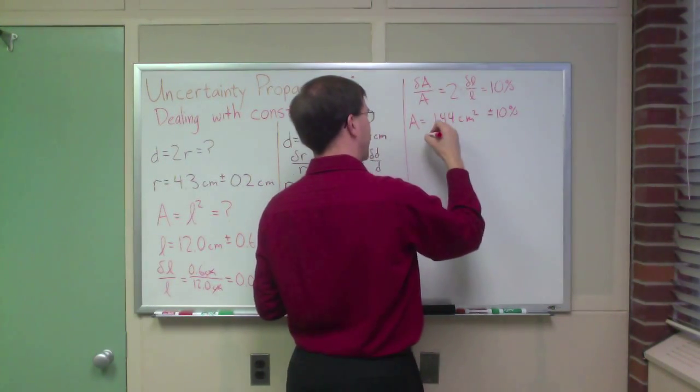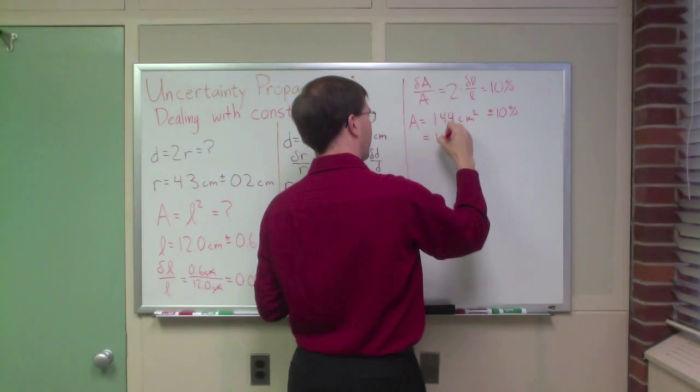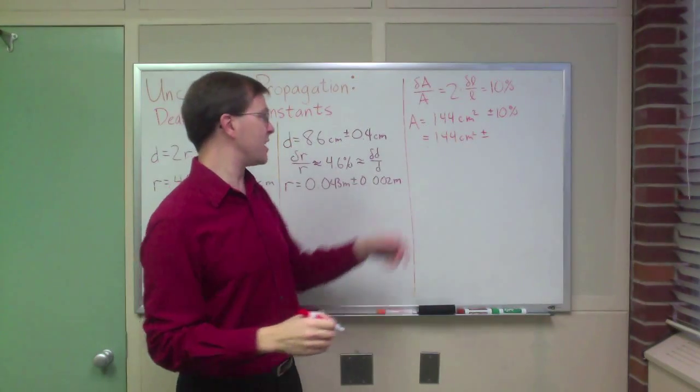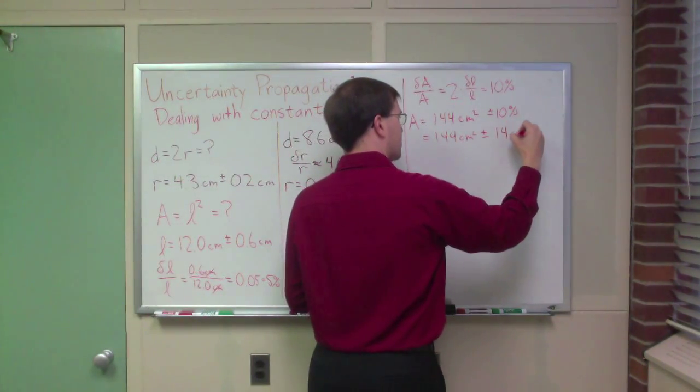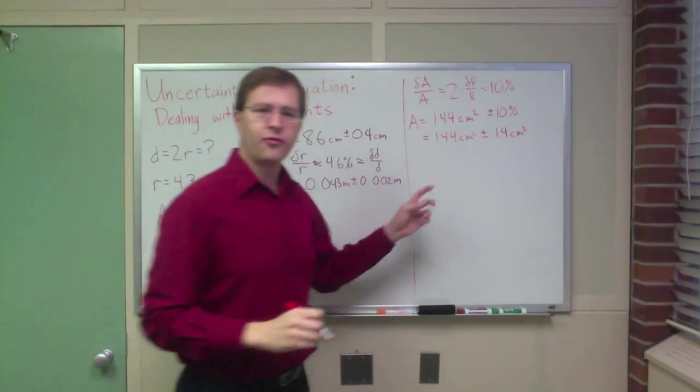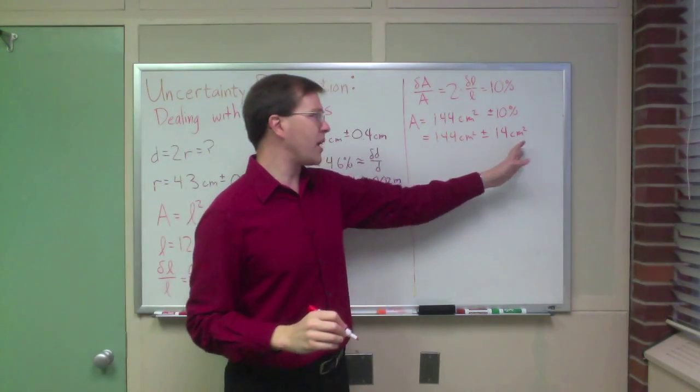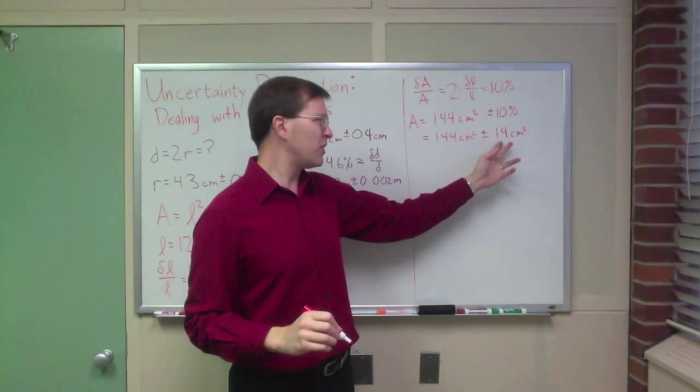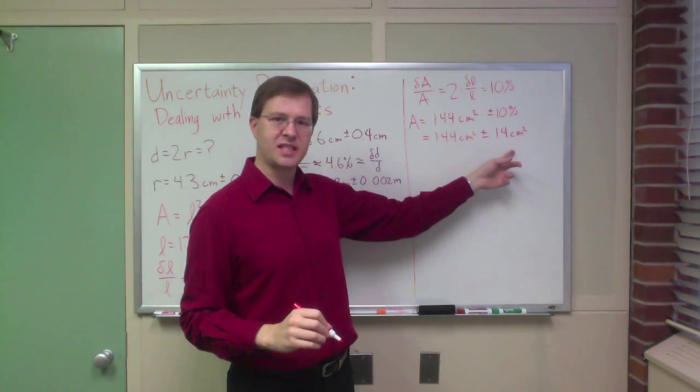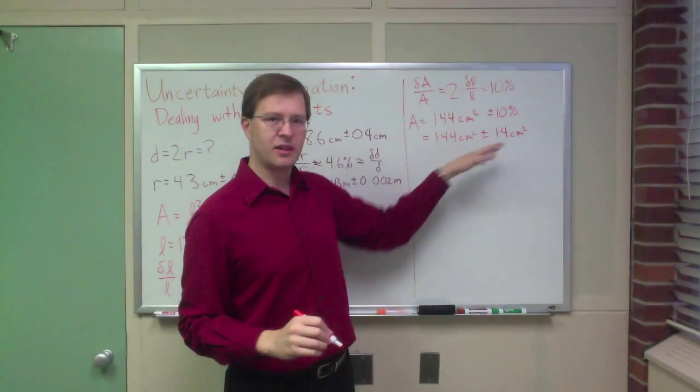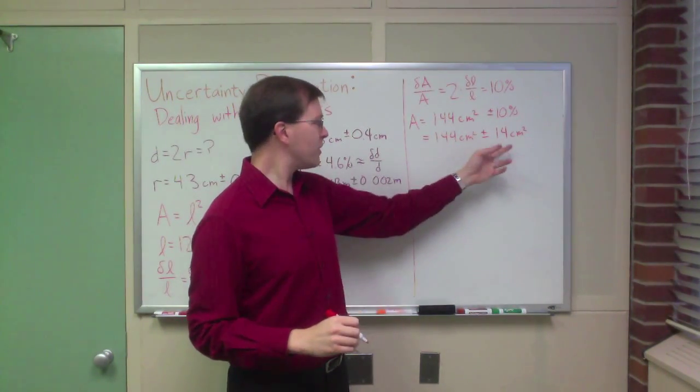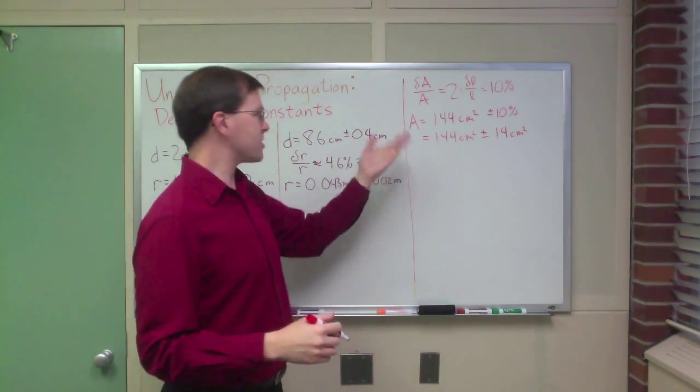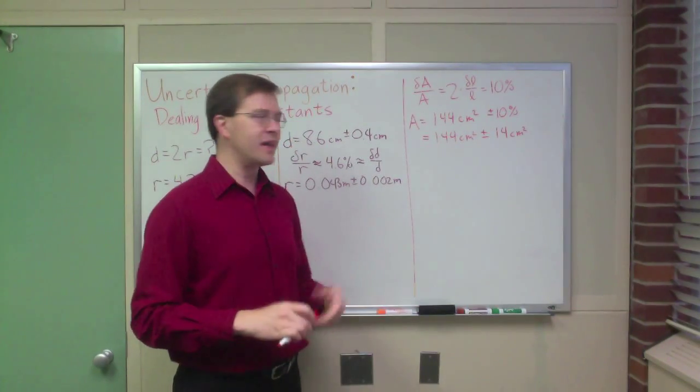Or in other words, 10 percent of that, this is 144 centimeters squared, plus or minus, my absolute uncertainty is just 10 percent of this, 14 square centimeters. I could say 14.4, but remember, I always round off my uncertainty to one or at most two significant digits. When the first significant digit is a one, I almost always keep a second sig fig there, just to get a bit more precision in my uncertainty. So this gives me a good estimate of the uncertainty in my area. And again, it's plus or minus 10 percent.